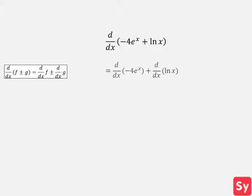Next example, we want to compute the derivative of negative 4 times e to the x plus ln of x. We can first use the sum difference rule to break this derivative into two. Now we will compute the derivative of negative 4 times e to the x first. We will use the multiplication by a constant rule and pull out the negative 4.